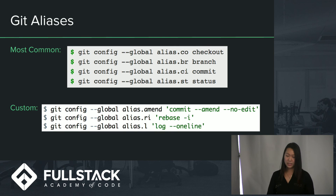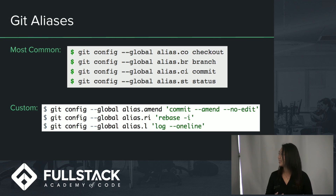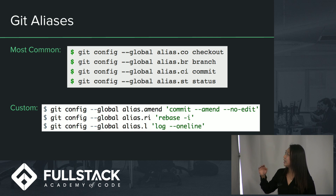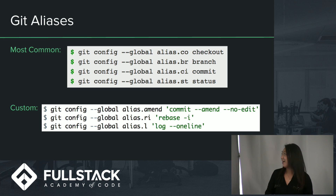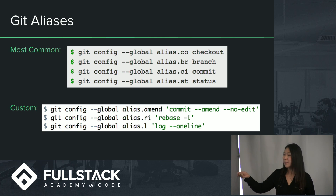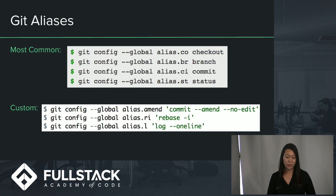Aliases: you can't auto-complete commands in git with tab, so instead of typing out the whole command you can create aliases to shorten the most common ones. For example, checkout, branch, commit, status — shorten those if you don't want to type the extra characters. What I think is more useful is for something like `commit --amend --no-edit` — instead of typing that whole thing out, just shorten it to `amend`. You can configure these in your git config file as well.